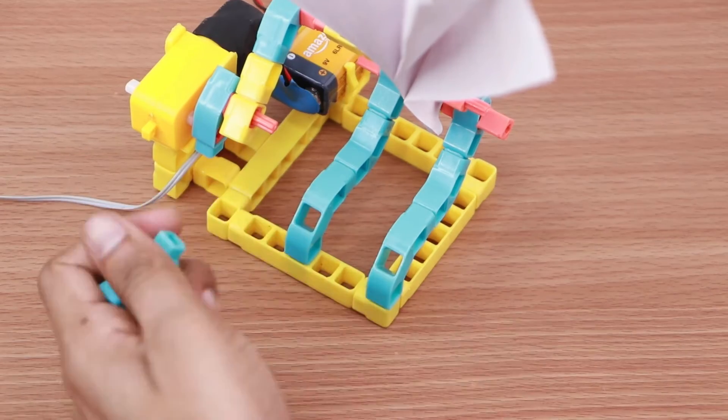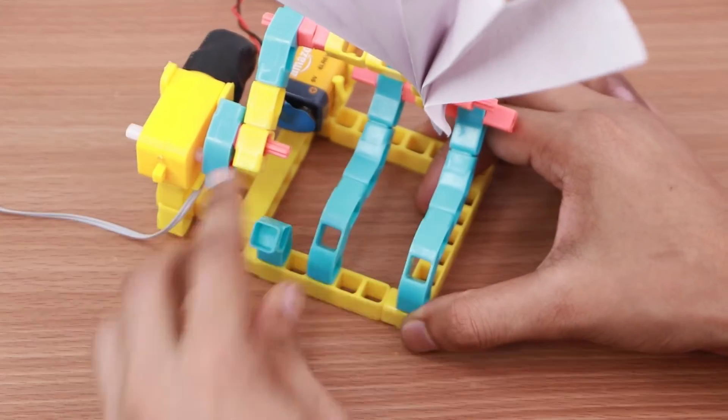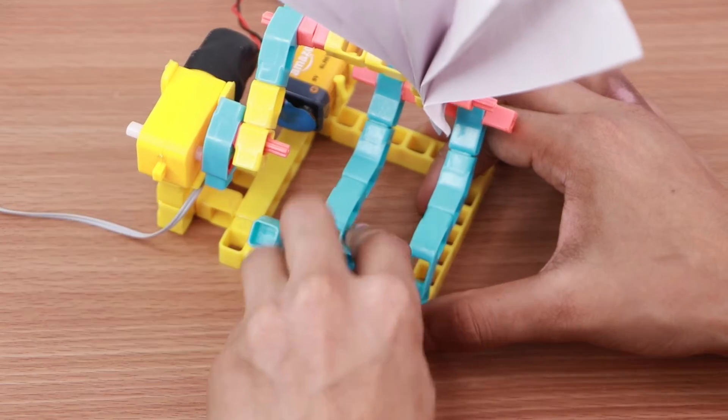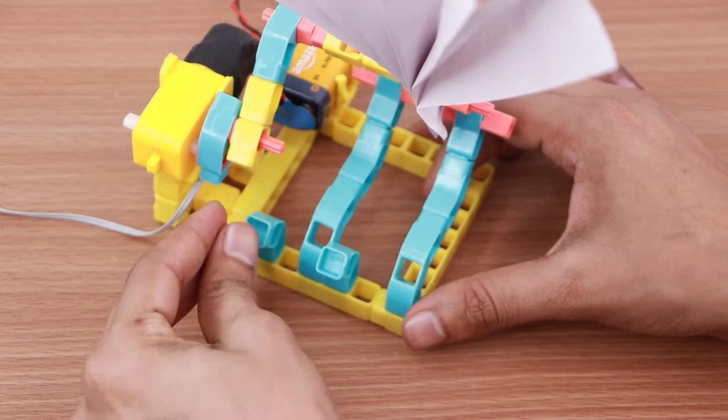For attaching the blocks, take two two-hole elbows and attach them to the base. Connect two blocks holders for placing blocks on them.